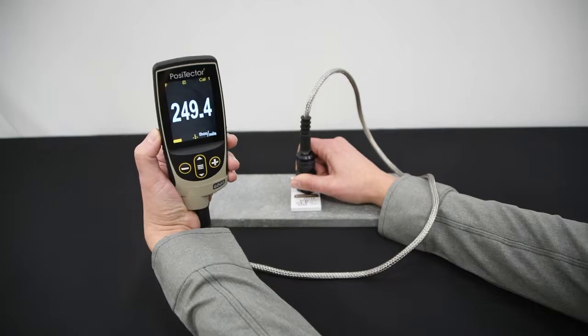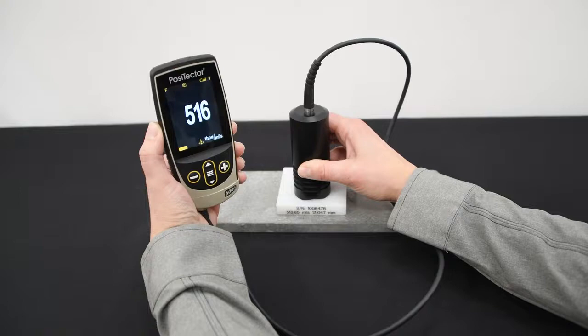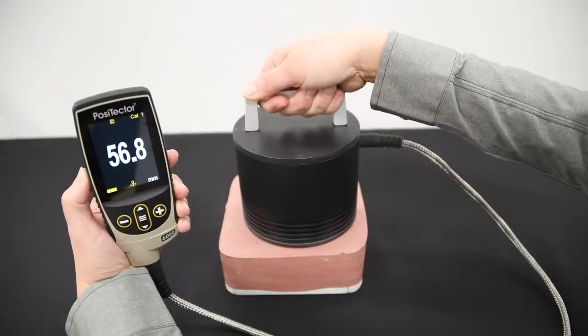Higher range probes are available for thicker coatings, with models available for measuring up to 63 millimeters or 2.5 inches of coating thickness.